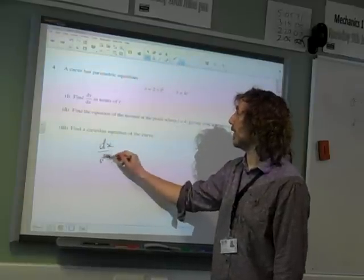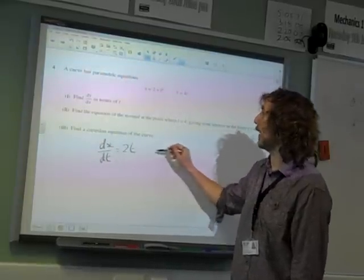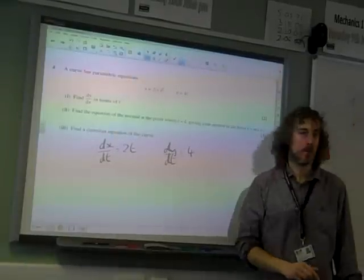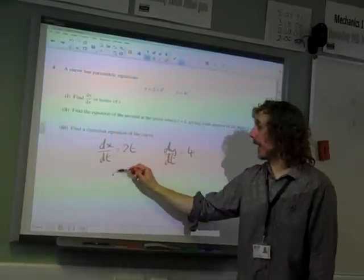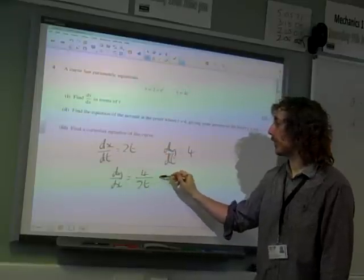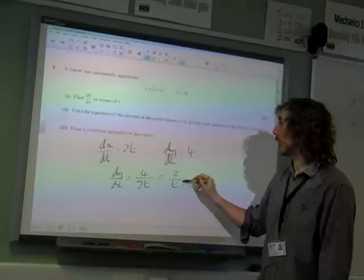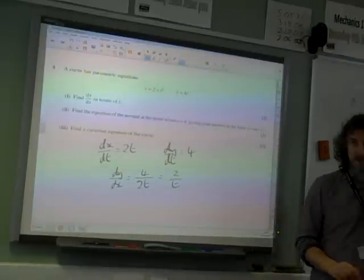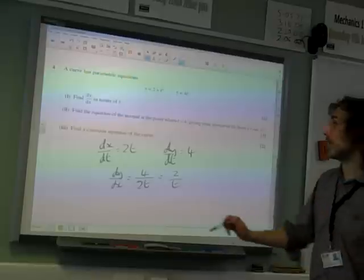We do dy by dt to get 4. We then do dy by dx, which is that one divided by that one. So we've got 2 over t. Look at that. Great. A nice 2 marks.